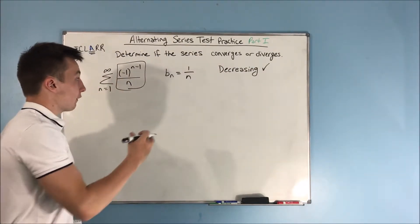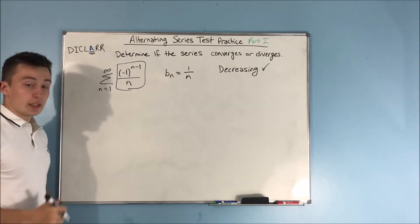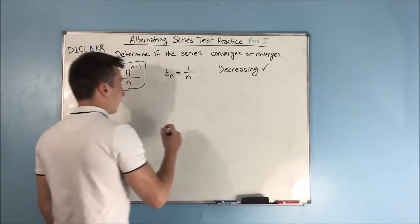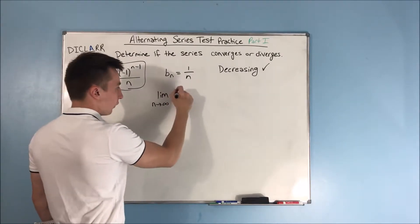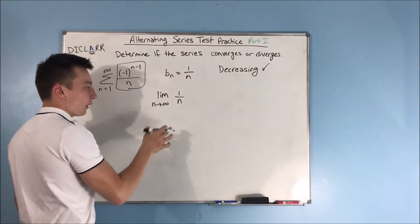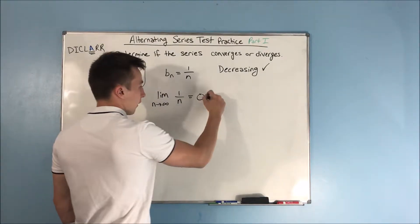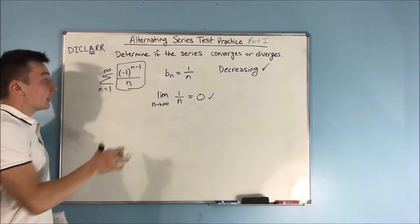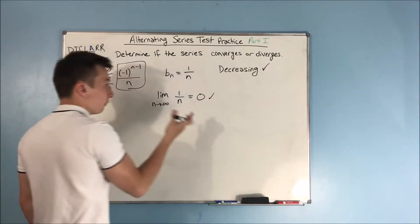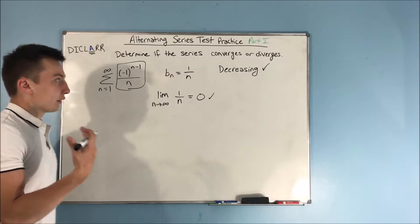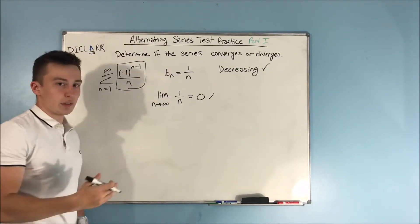Next, we want to determine if the limit as n approaches infinity of B sub n equals zero. If it does, then we can say the series is convergent by the alternating series test. The limit as n approaches infinity of one over n: as n approaches infinity, you get an infinitely large quantity on the bottom, which means this equals zero. That means this converges by the alternating series test. It passed both conditions — which is interesting, because the harmonic series itself is divergent, but the alternating harmonic series is convergent.